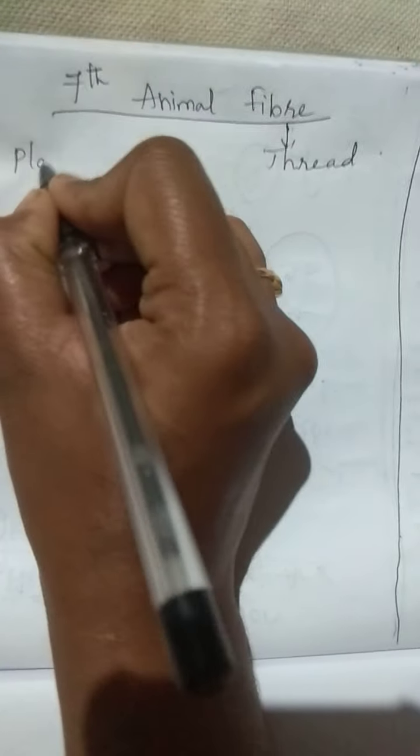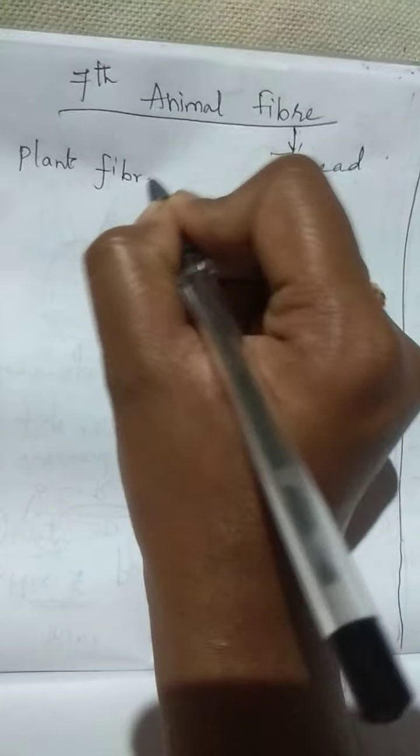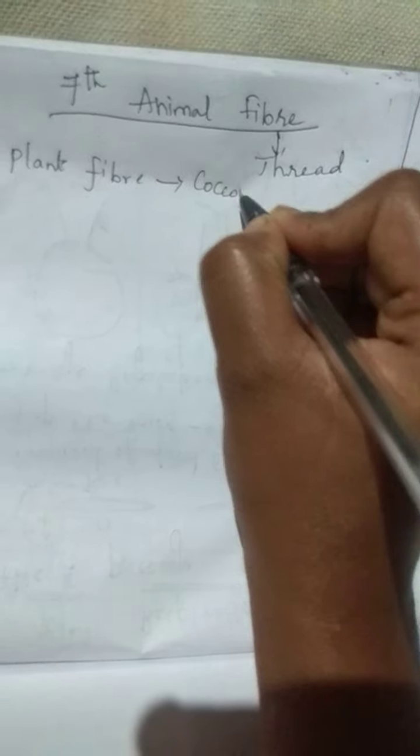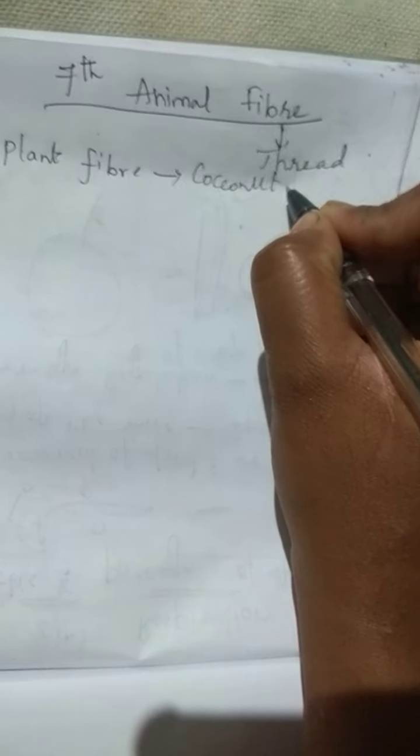Its name is animal fiber. Fiber means thread. From animals we will get fibers, and from plants we will get fibers. Plant fiber examples include coconut and jute. From coconut plants and jute plants we get fibers or threads.